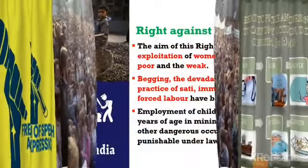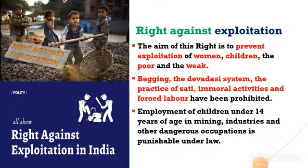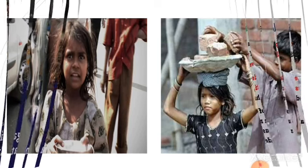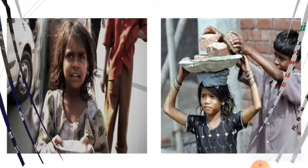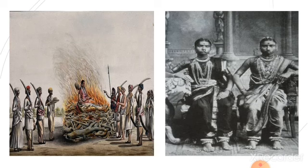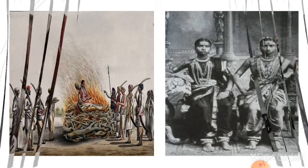The third right is right against exploitation. The main aim of this right is to prevent exploitation of women, children, poor and helpless people in society — exploitation meaning the abusing of the weak. Under this right, begging, sati system, devadasi system, child labour, and immoral activities have been prohibited.